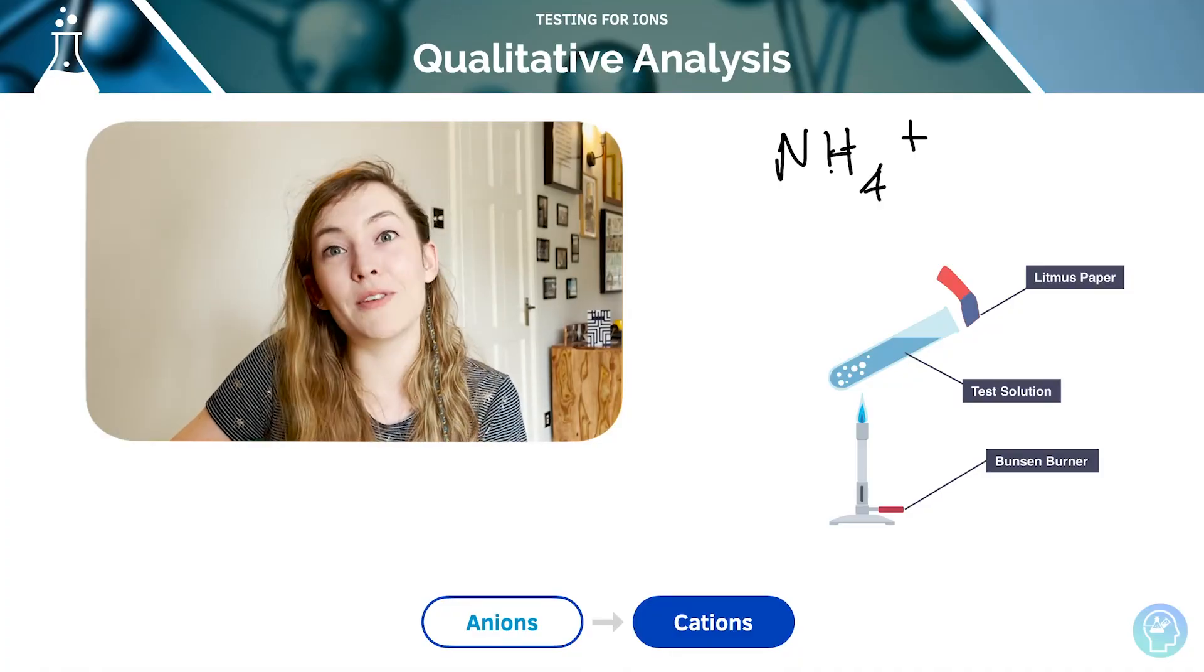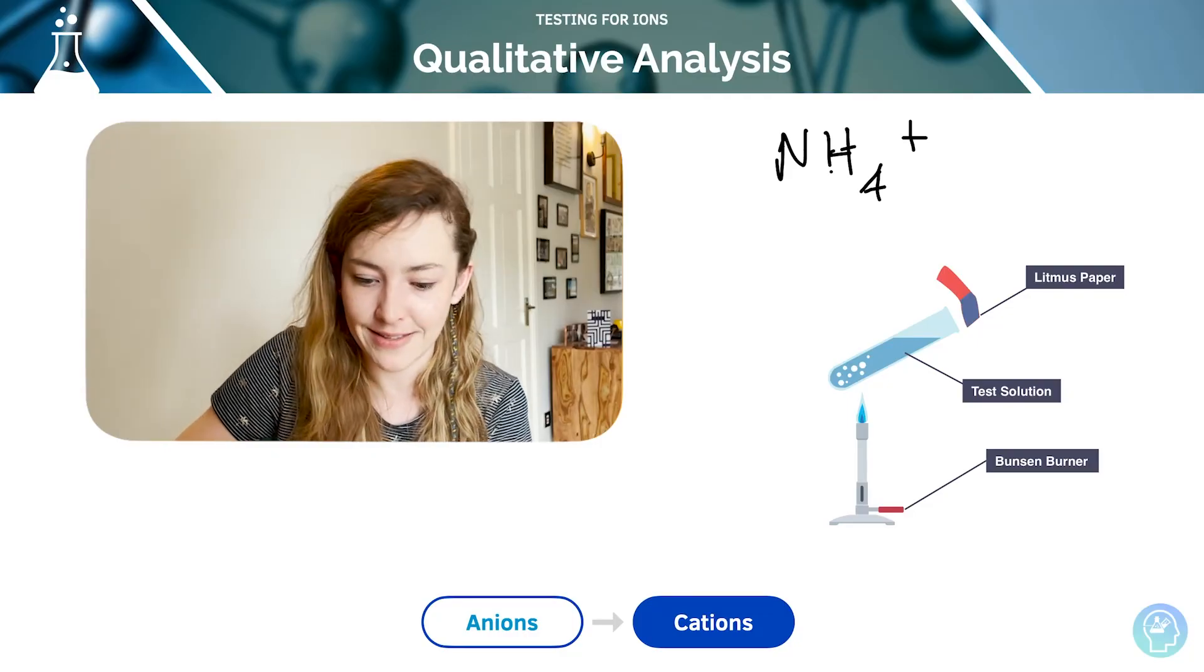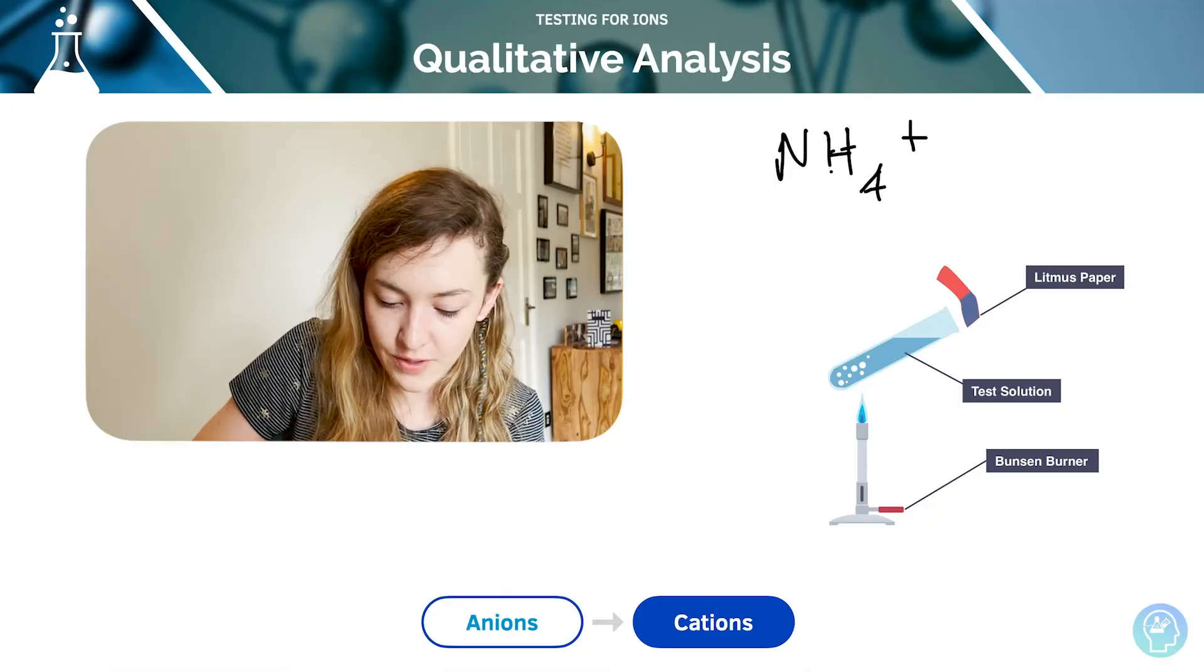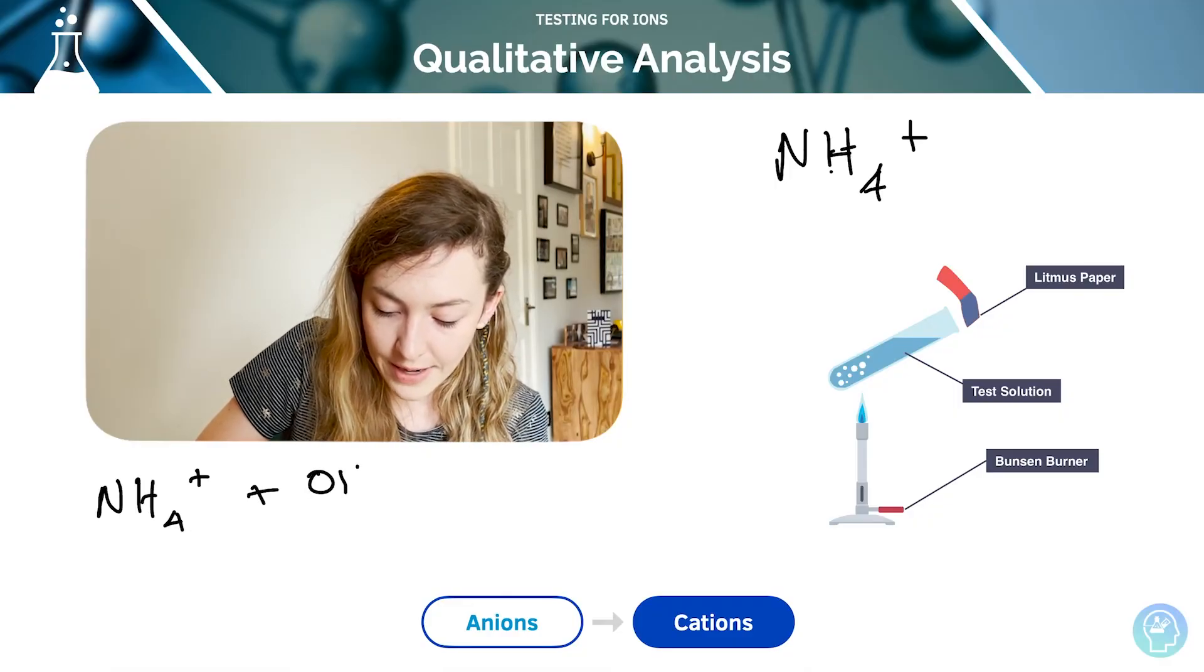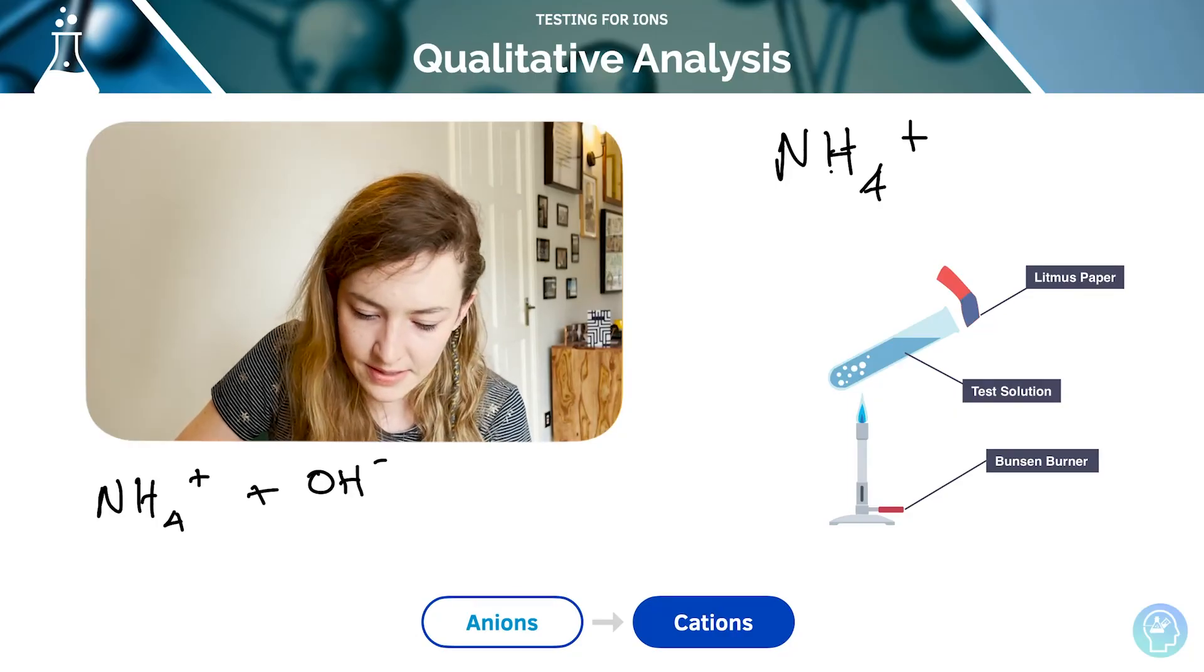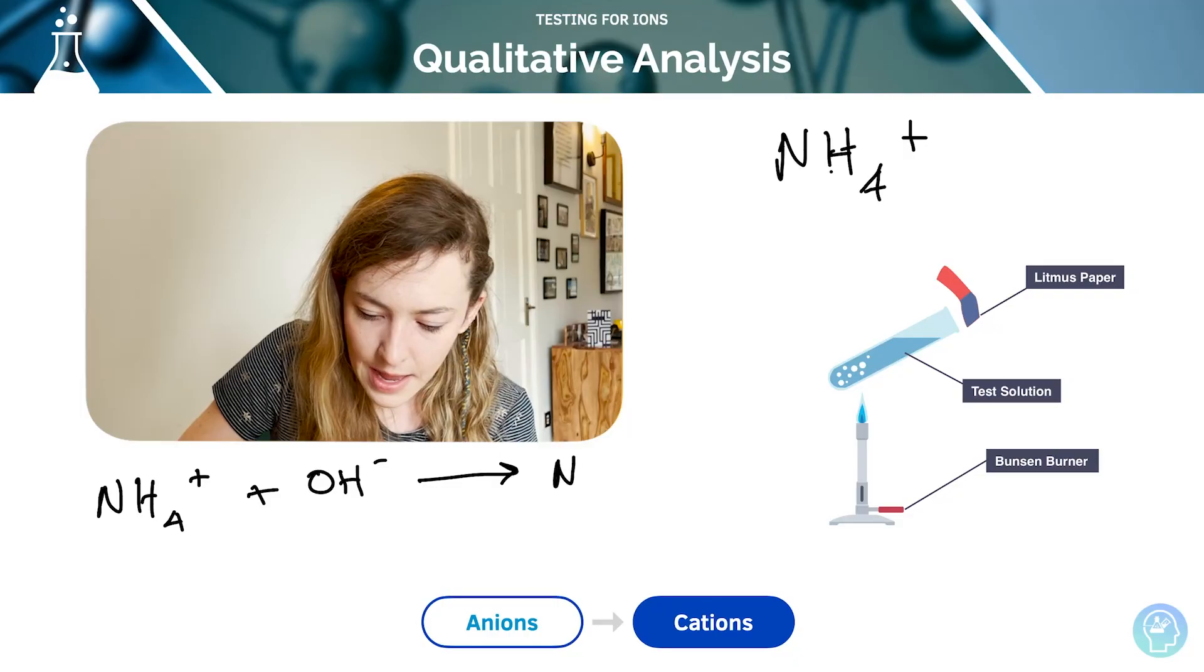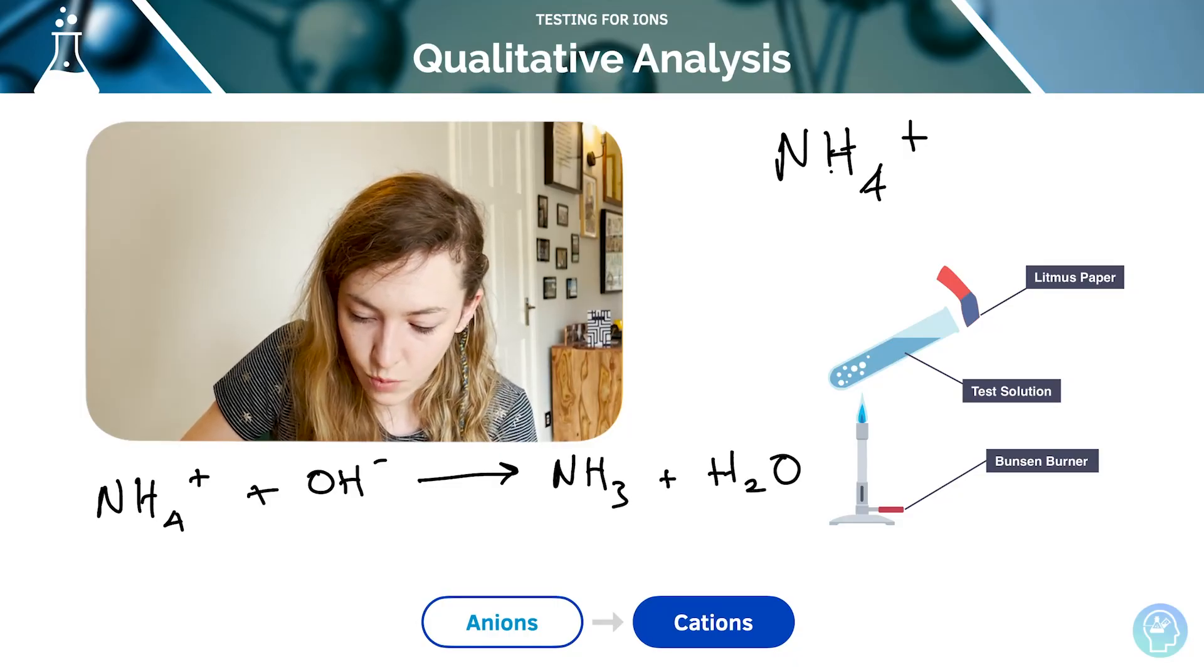It's going to turn damp red litmus paper blue. It's important that litmus paper is damp, because the gas will not dissolve onto the surface of the litmus paper unless it's damp. In your exams, you have to use that phrasing. So NH4 reacts with sodium hydroxide solution, of which the OH⁻ is the active part. We're going to get ammonia gas and some water as well.